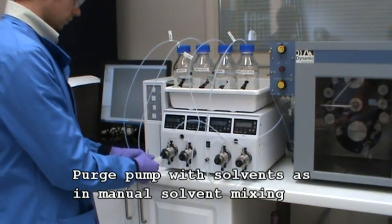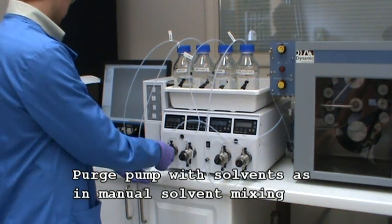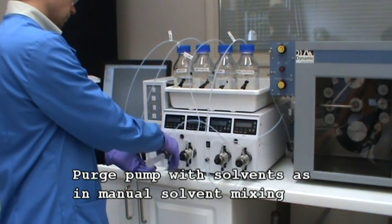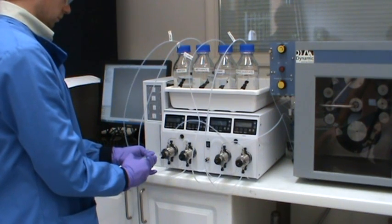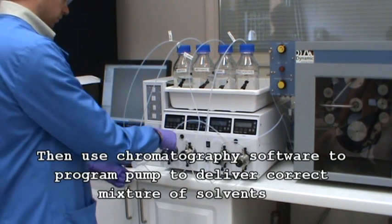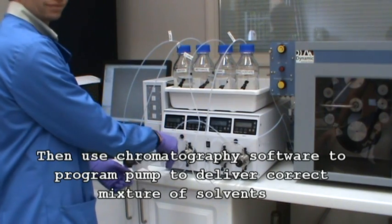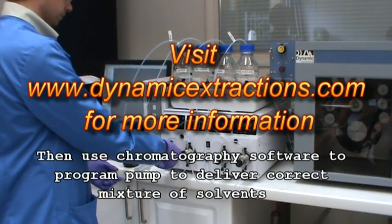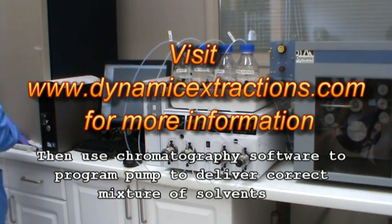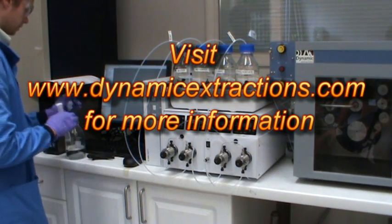Once you have purged each of the pump heads with the solvent it is going to pump, you can program the chromatography software to deliver each of the solvents in the correct ratios to mix up the solvent system you want to use. This is the essence of on demand mixing and it greatly improves throughput and reliability of solvent system mixtures on small volumes.